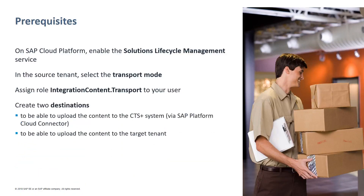Furthermore, you need to create two destinations. One destination points to the transport management system — this is needed to automatically upload the content to the CTS Plus system. Because the CTS Plus system is located within your company network, this connection needs to be secured via SAP Cloud Connector. On the CTS Plus system, you need to create an HTTP destination pointing to the target tenant, needed to automatically upload the content to the target tenant once the transport has been released. You need to create such a destination for each target system.